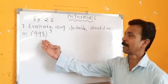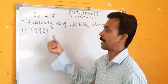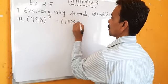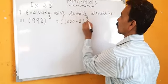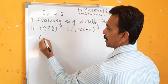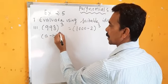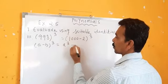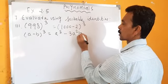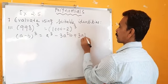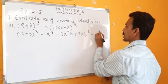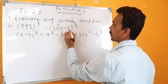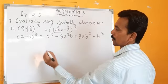The third bit is 998 whole cube. We write this as 1000 minus 2 whole cube. We will use the identity A minus B whole cube equals A cube minus 3A squared B plus 3AB squared minus B cube. Here A is 1000 and B is 2.